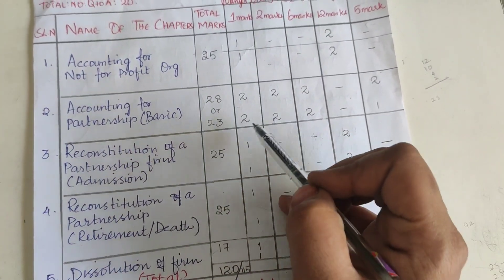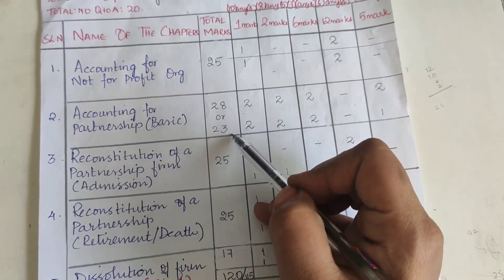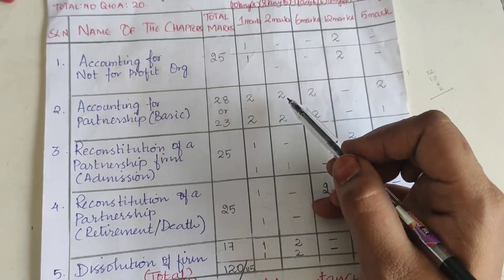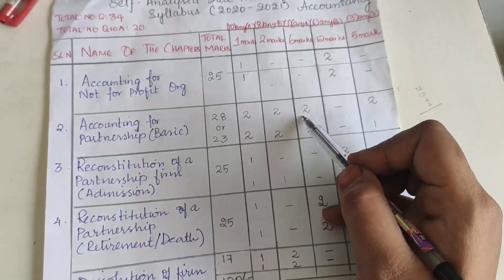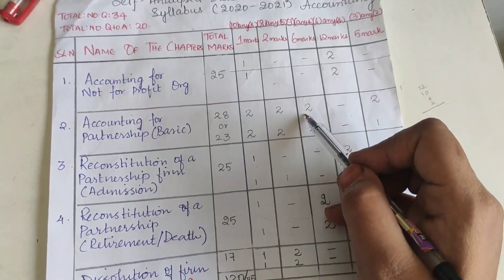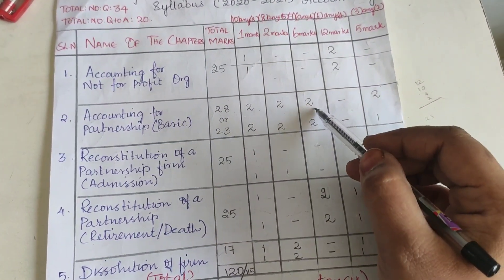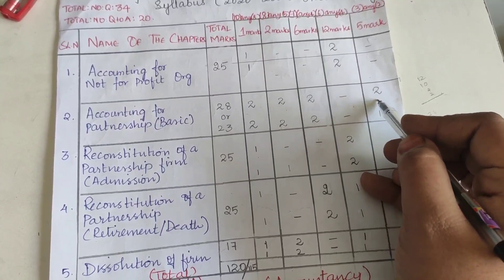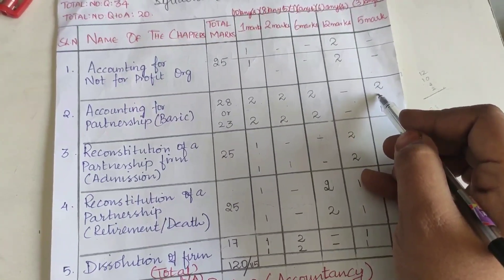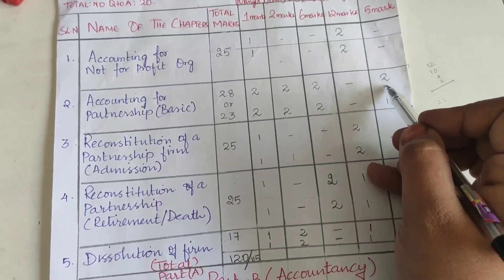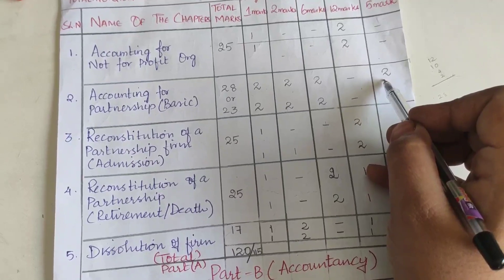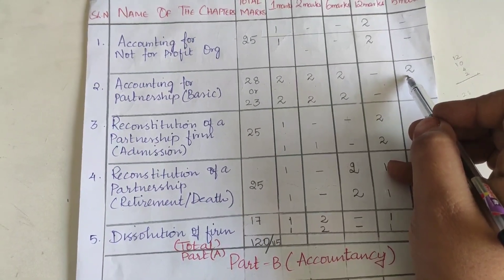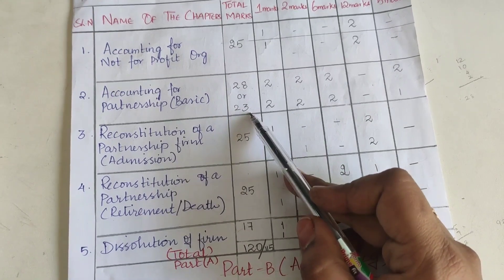The second chapter is the most important one — you will be able to get approximately 28 or 23 marks from it. One mark will be asked twice, 2 mark will be asked twice, and 6 marks will be asked twice. Calculate interest on capital and the profit and loss appropriation account are must questions. Interest on capital or interest on drawings will be asked, along with fixed capital account or fluctuating account — write the format with any 5 imaginary figures. It may also ask about the partnership deed: if there is no partnership deed, how will you deal with the following transactions, such as how you will share the profit.